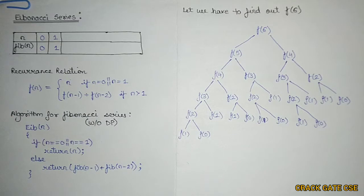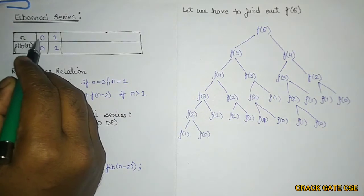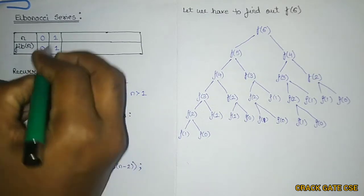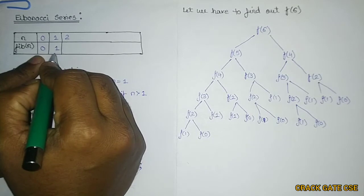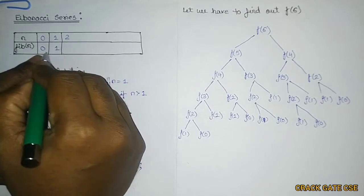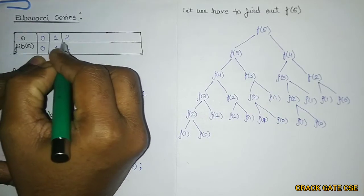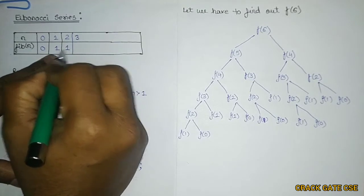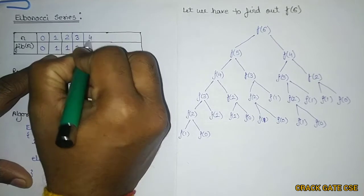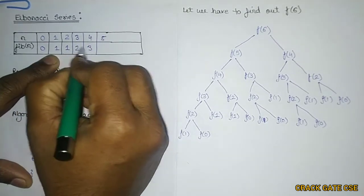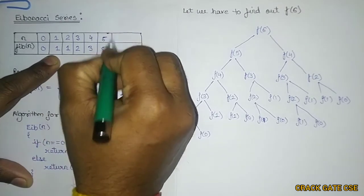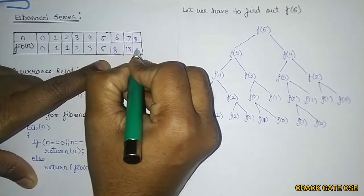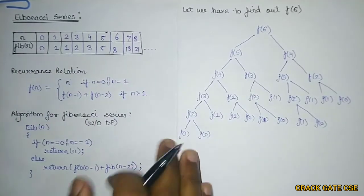The Fibonacci sequence is predefined: Fibonacci of 0 is 0 and Fibonacci of 1 is 1. If I try to find out Fibonacci of 2, it will be the sum of the previous two values: 0 plus 1 equals 1. Similarly, Fibonacci of 3 is 1 plus 1 equals 2, Fibonacci of 4 is 1 plus 2 equals 3, Fibonacci of 5 is 3 plus 2 equals 5, Fibonacci of 6 is 8, and Fibonacci of 7 is 13, Fibonacci of 8 is 21, and so on.